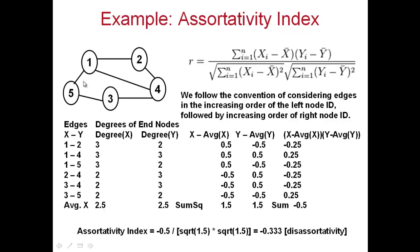Node 1 has degree 3, so that is written here — again node 1 has degree 3. Node 2 has degree 2, so degree 2. Node 3 has degree 2, so degree 2. Node 3 again, degree 2. For set Y: node 2 has degree 2, written as 2. Node 4 has degree 3, written as 3. Node 5 has degree 2, written as 2. Node 4 has degree 3 — so 3 and 3. Node 5 has degree 2. That is the second step: write the edges and then write down the degrees of the end vertices.